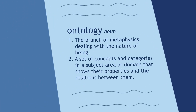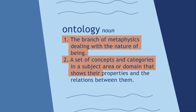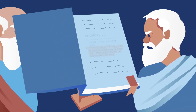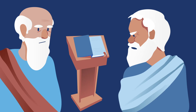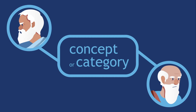There are two definitions for ontology. One, the branch of metaphysics dealing with the nature of being, and two, a set of concepts and categories in a subject area or domain that shows their properties and the relations between them. These two definitions are actually related to each other, although the second definition is the one we're more concerned with today.